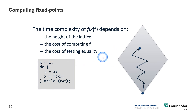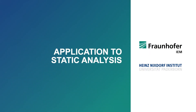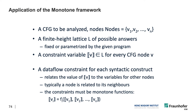Kleene's fixed point theorem talks about regular functions, lattices, and the ascending chain condition. I want to talk a bit more about how this concretely applies to static analysis. We can apply this directly to the monotone framework, because the monotone framework has exactly the same assumptions and restrictions as Kleene's fixed point theorem — obviously not by accident, but by design. We assume we have a control flow graph to be analyzed with a number of nodes.